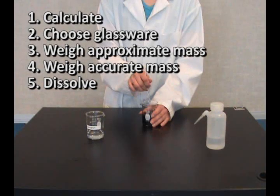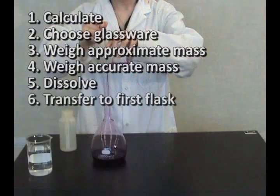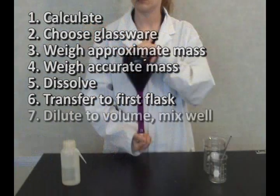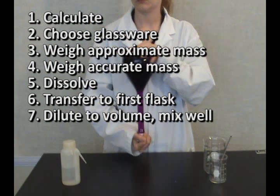Dissolve the potassium permanganate. Transfer to the first flask to be used in the dilution using the glass rod to pour. Dilute to volume, invert, and mix at least 15 times.